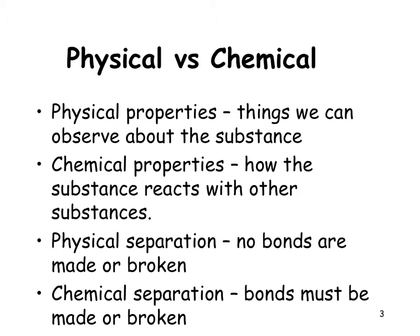We're going to talk about physical properties and chemical properties of elements, physical change and chemical change. Physical properties are things that we can observe — for example, color, texture, shape. Things like that are physical properties.